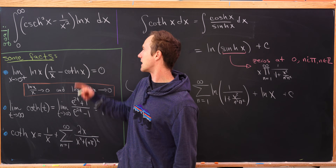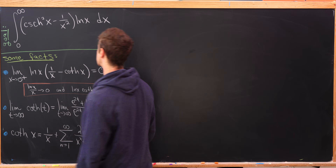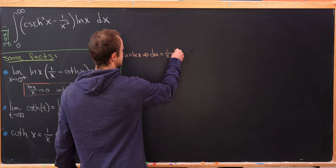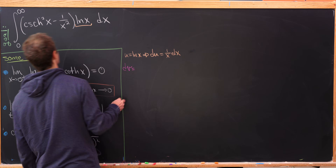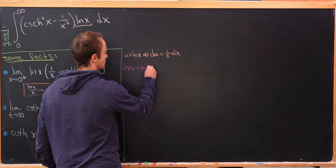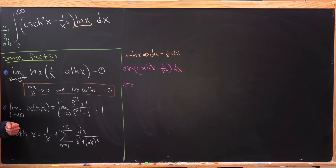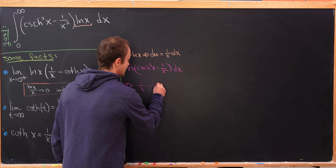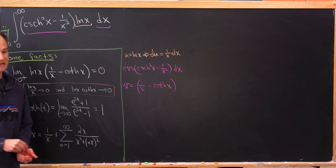Now that we've established all our tools, let's work towards our goal integral using integration by parts. We take u to be the natural log of x, so du equals 1 over x dx. Then dv is the hyperbolic cosecant squared minus 1 over x squared dx. The antiderivative of dv — using standard hyperbolic trig rules — gives us v equal to 1 over x minus the hyperbolic cotangent of x.